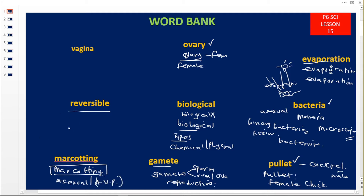This word is reversible. Some make a mistake writing 'reversable' — putting an A instead of an I, making it '-able.' That is wrong. The word is reversible. To reverse means to go back from one state to another and then back to the original state. The types of changes that are reversible are called physical changes.